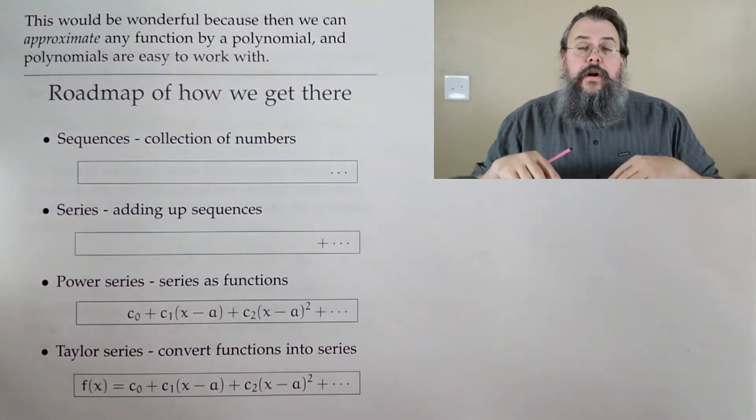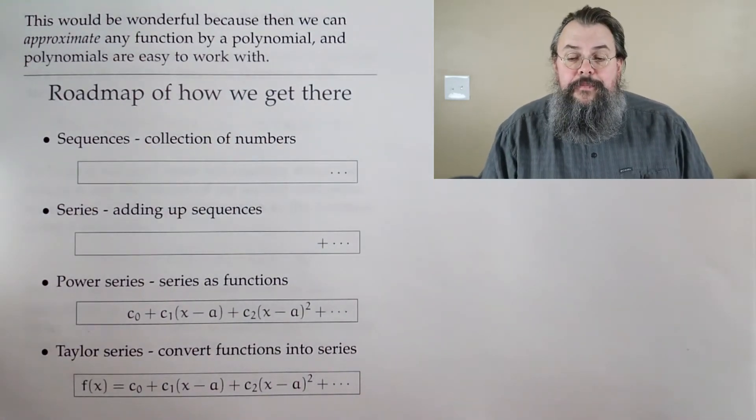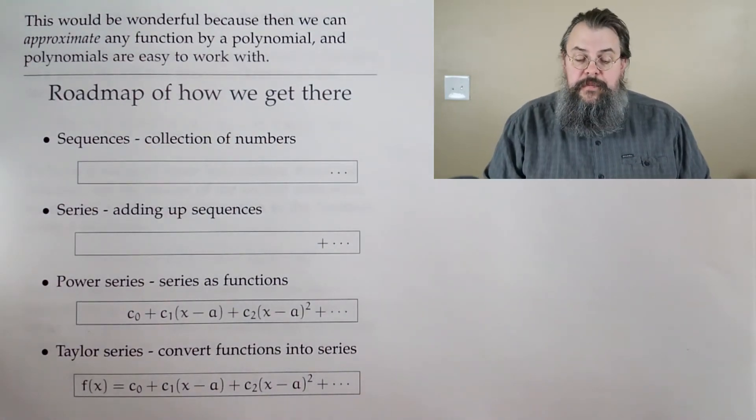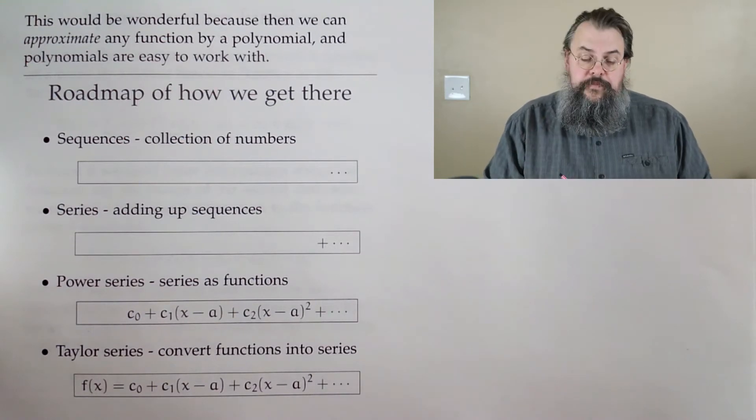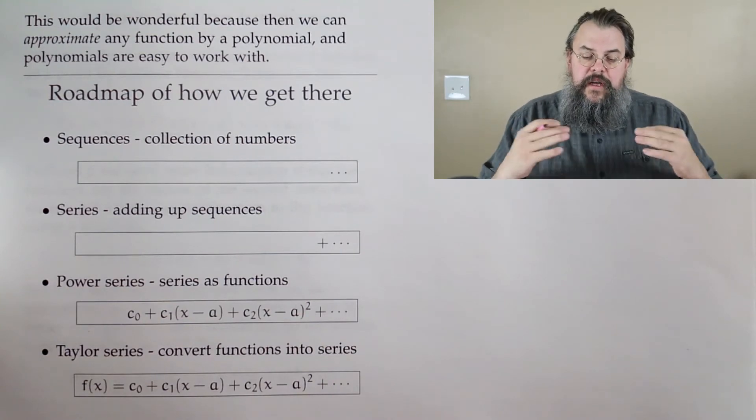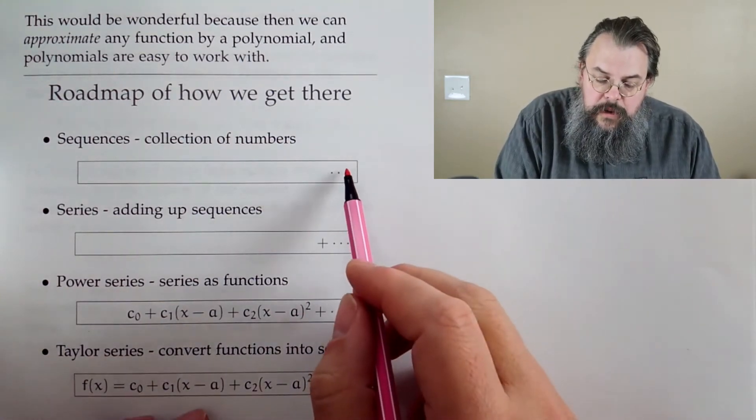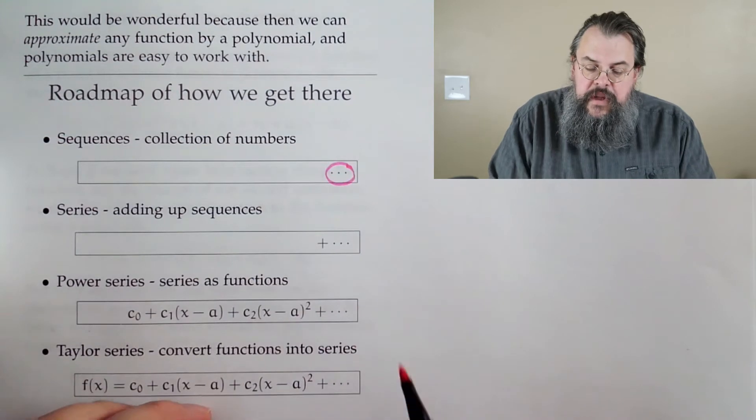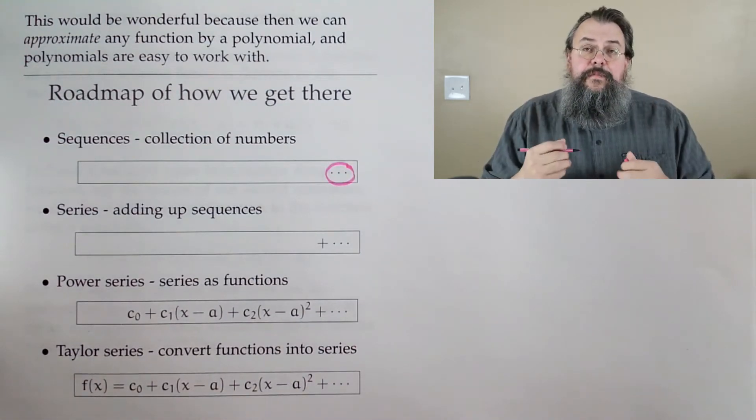So here's our map. This will tell us what our steps are along the way. We're going to start with something very simple. We're going to start with saying, look, we're after sequences. These are going to be collections of numbers. So when we think of dot, dot, dot...